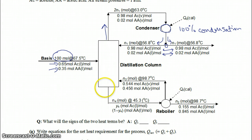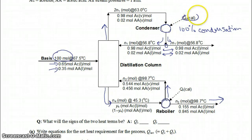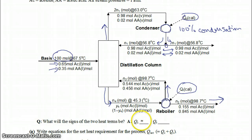At the bottom of the distillation column you have your liquid stream which is enriched in your heavy product, and that is sent to a reboiler where extra heat is being added to the system, vaporizing some of your stream, and the rest is leaving as your product stream. For the heat flows: QC for the condenser has a minus sign because heat is being removed, and QR for the reboiler has a plus sign because heat is being added to the system.